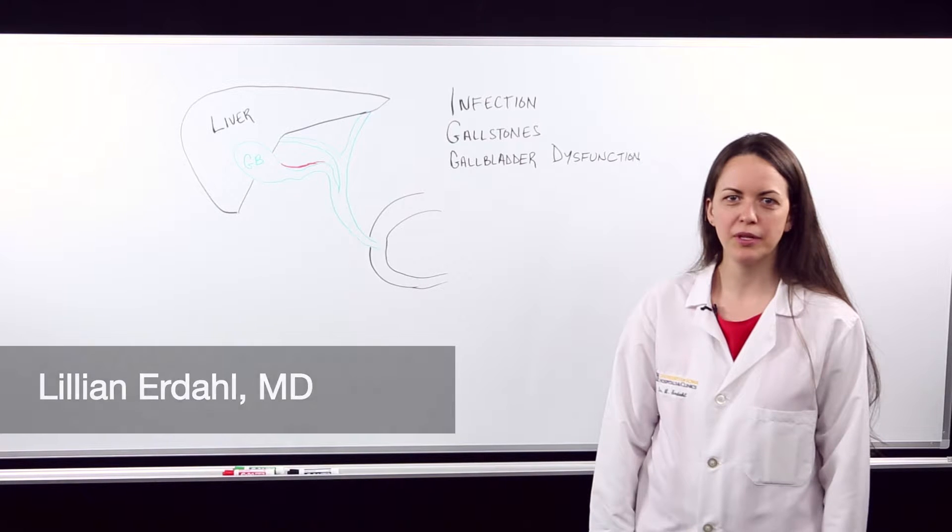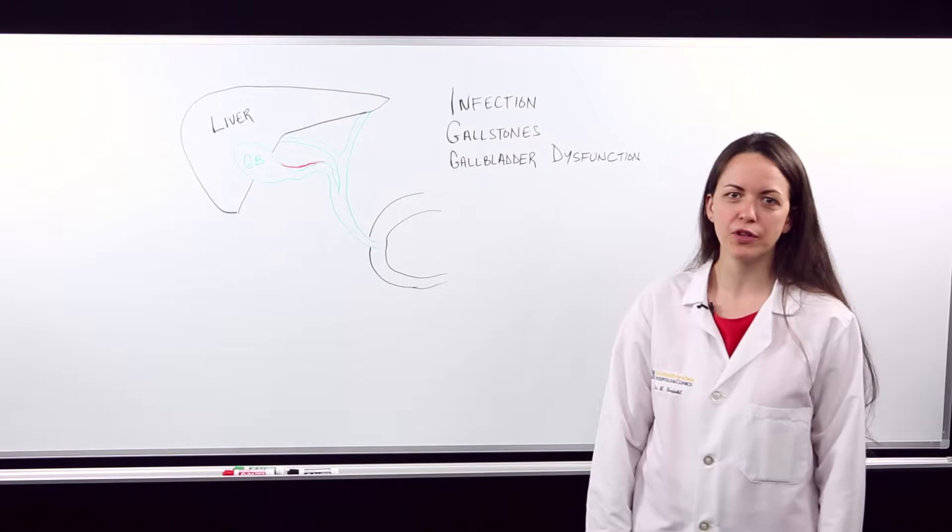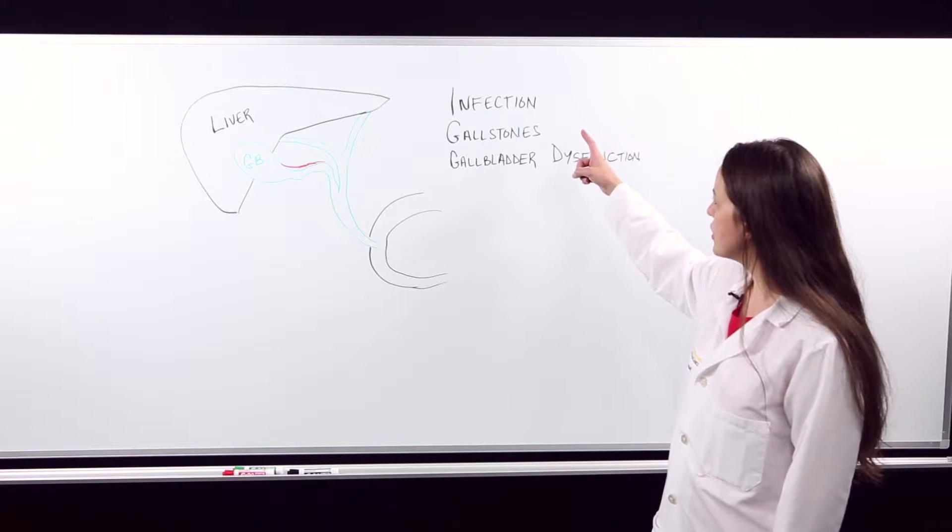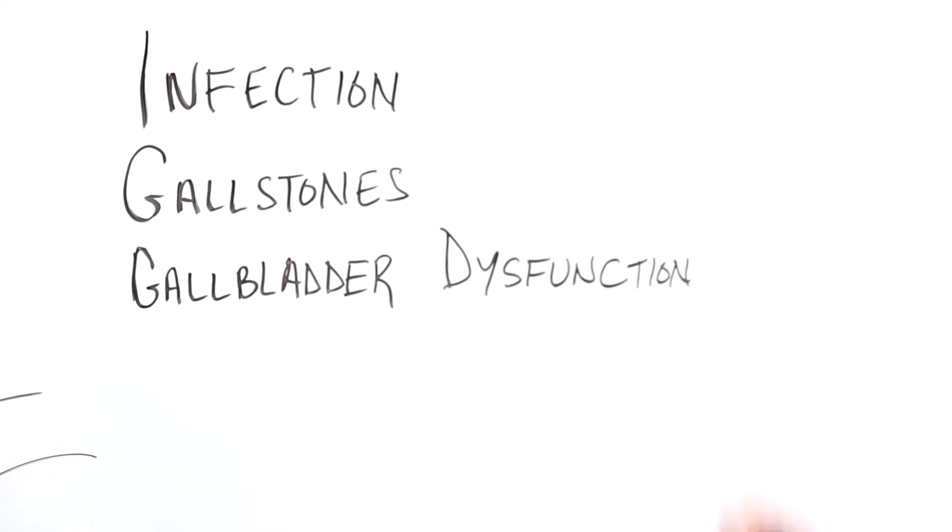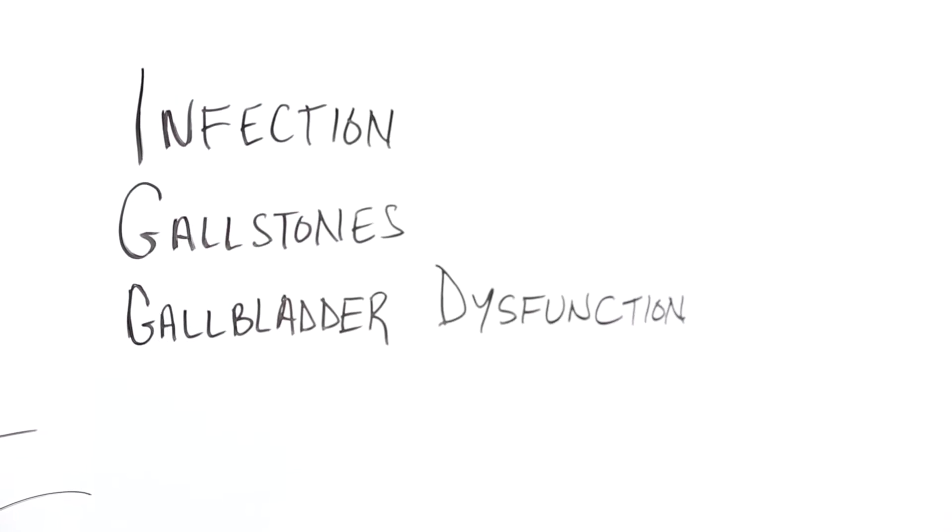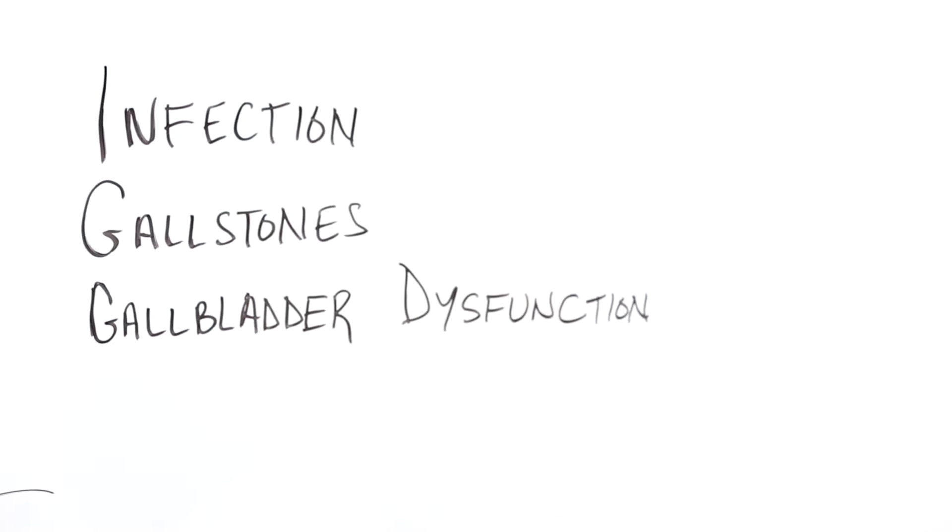Today I'm going to talk to you about problems that can happen with the gallbladder and why you might be referred for surgery. Some of the main problems are infection, stones that develop in the gallbladder and can even leave to cause additional problems, and gallbladder dysfunction where the gallbladder doesn't empty properly to aid in digestion.